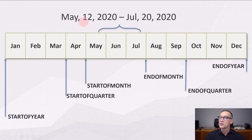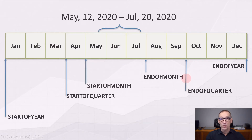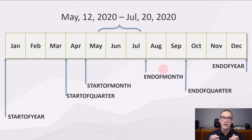If the selection contains dates from the 12th of May up to the 20th of July 2020, ENDOFMONTH returns the end of July — that is the end of the month to which the last day belongs to. STARTOFMONTH returns the beginning of May. STARTOFQUARTER returns the 1st of April, that is the quarter of May, and ENDOFQUARTER returns the end of September, the end of the quarter to which the last day belongs to. STARTOFYEAR and ENDOFYEAR do not change because they still go from the 1st of January to the 31st of December of the current year.